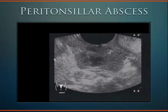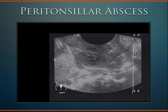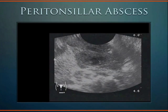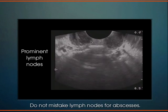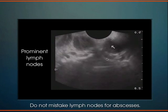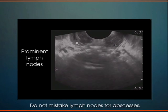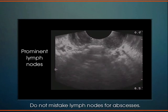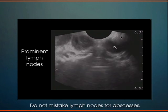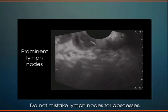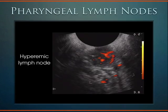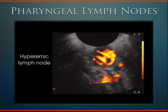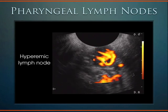This hypoechoic area here is the abscess. Sometimes you're not sure if it's an abscess — it turns out this is just prominent lymph nodes. As the patient swallows, you can many times see these lymph nodes come closer together. These are bilateral prominent lymph nodes; you wouldn't want to put a needle in those — it wouldn't be necessary. You can avoid doing an unnecessary procedure once you see pharyngeal adenopathy in the back of the throat. To confirm this is a lymph node: lymph nodes can be quite vascular, and this hyperemic lymph node seen with power flow Doppler confirms it's a lymph node and not an abscess. An abscess would not light up with power Doppler.